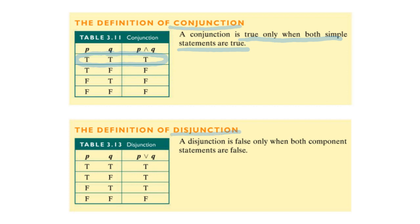The disjunction is false only when both component statements are false — p is false and q is false. That's the only time the result is false. You don't have to memorize these; you're allowed to use a formula sheet available in the course tools document sharing on Math Lab. You just need to know how to fill out your truth table correctly.